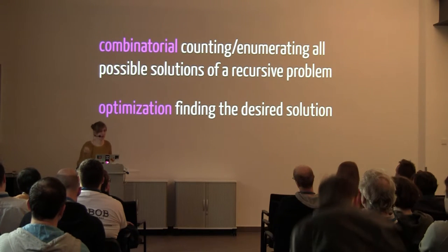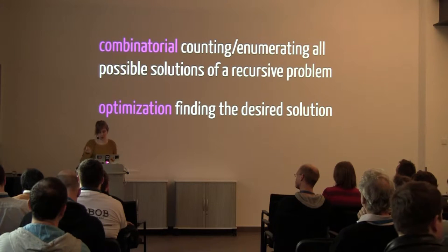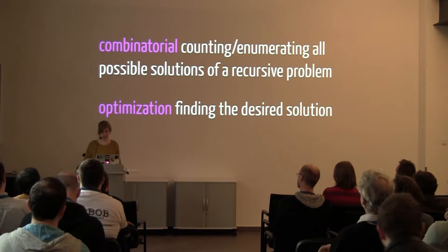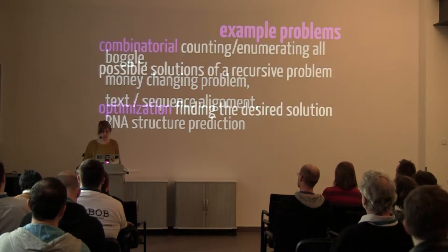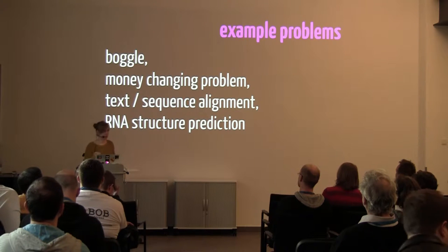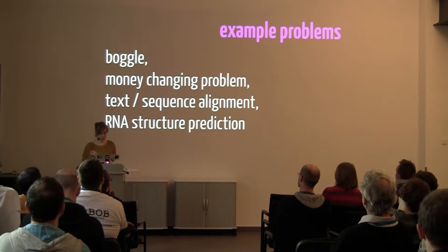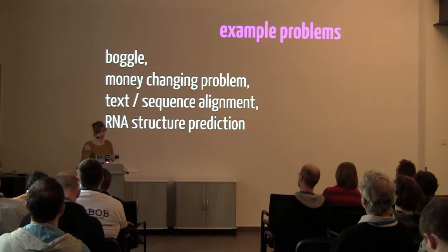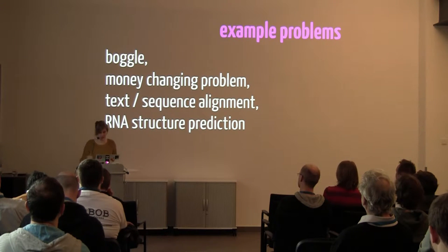We want to do this to solve combinatorial optimization problems. That means these problems have a combinatorial part — we have some counting to do, we have to enumerate all possible solutions of a recursive kind of problem. And then we have the optimization part, so we have to find a desired solution. Examples include the Boggle problem, where you are searching for words in a grid of characters.